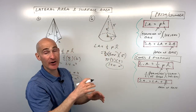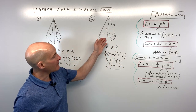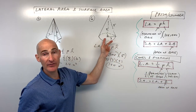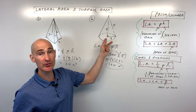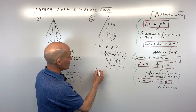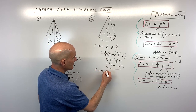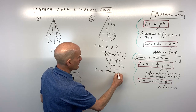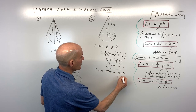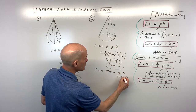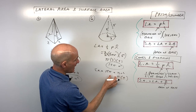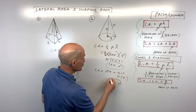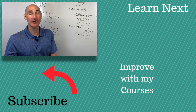That's our lateral area of 15π units squared. To find the surface area, we add the area of the circular base, which is πr². The radius is three, so three squared is nine, giving us 9π. Adding 9π to 15π gives a total surface area of 24π units squared.